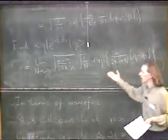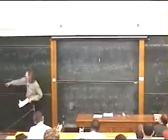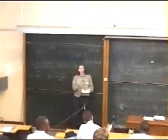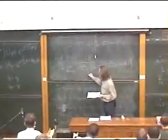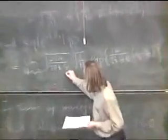And the path integral there, rather than integral over this single path Q of t, you integrate over the whole field phi of x, y, z, and t. So it becomes a much more complicated thing.